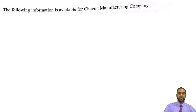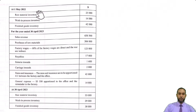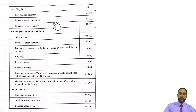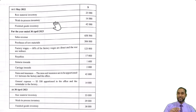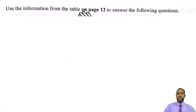Question three says the following information is available for Chevron manufacturing company. Now we have a whole list of stuff here clearly geared towards a manufacturing account. I'm not going to read through all of these things right away. I'm going to scroll down to the next part of the question because there are little theory parts first, and we're going to answer that first and then go on to the manufacturing account. It says use the information from the table on page 12 to answer the following questions.